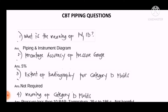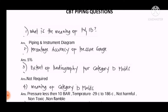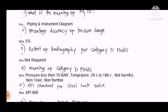The percentage accuracy of a pressure gauge is 5%. Question number three: what is the extent of radiography for category D fluids? Referring to ASME B31.3, the answer is RT is not required for category D fluid as per ASME B31.3.